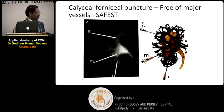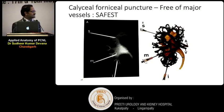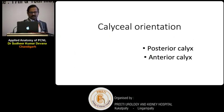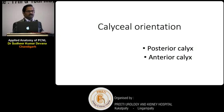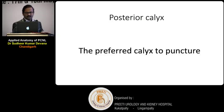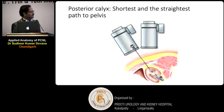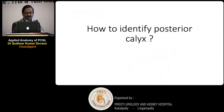The only safe way to enter is through the calyceal fornix, where you have the least chance of major vascular injury. Coming to the pelvicocalyceal system: the orientation of the calyx — anterior and posterior — is important. Identifying the posterior and anterior calyceal orientation is very important since the posterior calyx is the preferred calyx to puncture, because it is very close to the avascular Brödel's line, and it offers the shortest and straightest path to the pelvis.